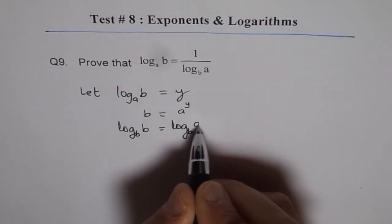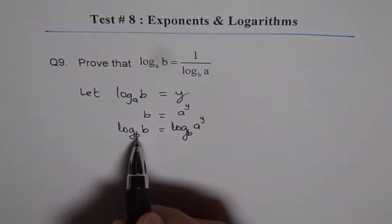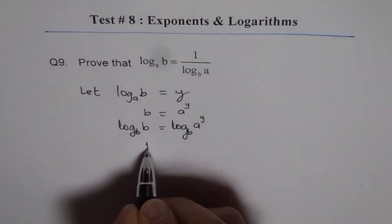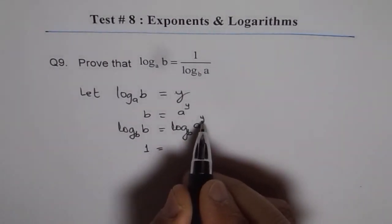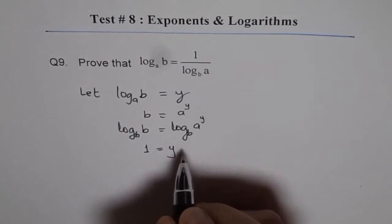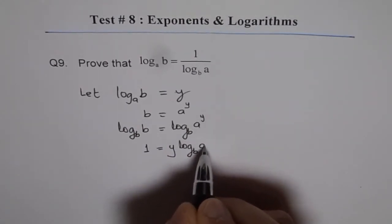Log base b of b equals log base b of a to the power of y. Now what is log base b of b? It is 1. So 1 equals, and this from power rule can be written as y times log b of a.